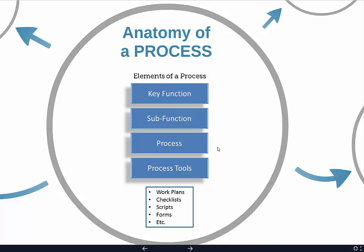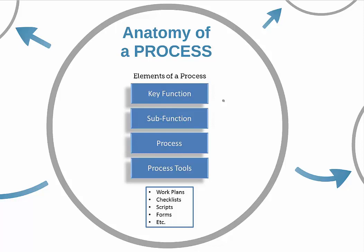All of that detail is organized in what we call process tools, and there are eight different process tools available in a process. Those process tools are organized underneath a process name, within a subfunction, and a key function. There are four key functions in your business: get the business — all of your sales and marketing processes; do the business — delivering on the promise you made in the sales process, all your client fulfillment and operational processes; run the business — your back office procedures, admin, finance, HR, IT; and finally, guide the business — the strategic, management, and leadership processes for guiding the business from where you are today to where you want to get to.